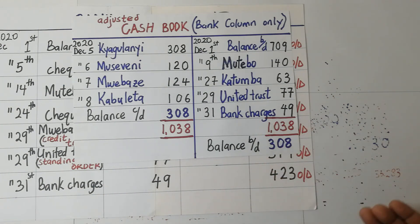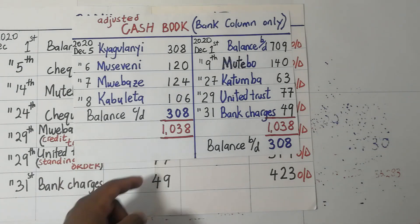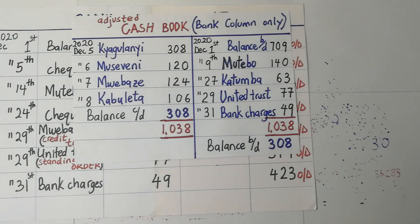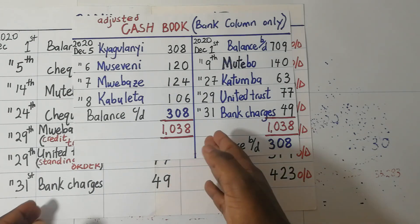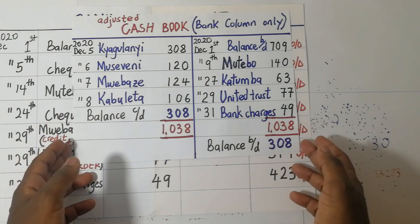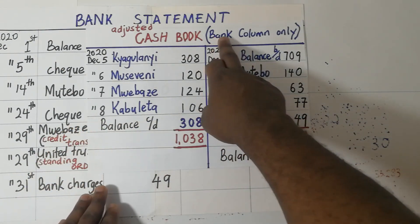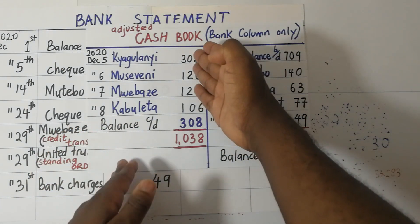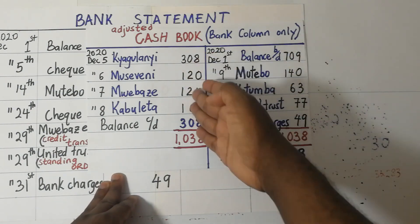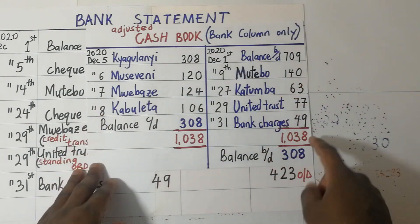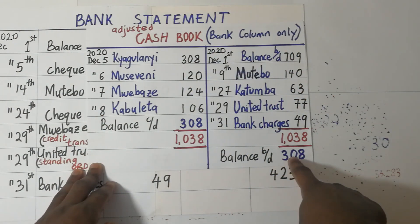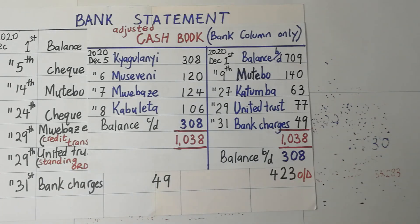Now we all know that cash books normally have debit balances. In other words, the cash account normally has a debit balance. Cash being an asset, the normal balance for assets is normally debit. But in this case, when you look at this cash book, we've only extracted the bank column. So the bank column, according to this, it's showing a credit balance of 308 shillings.